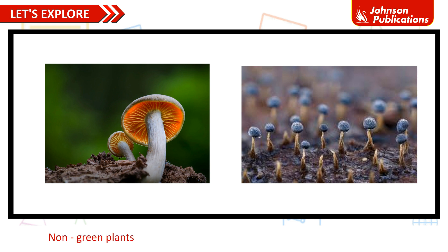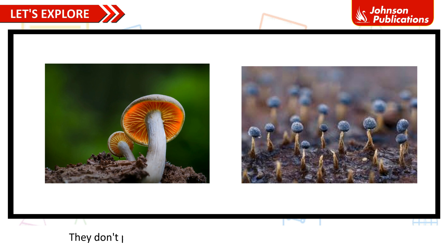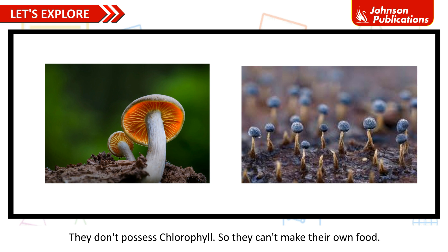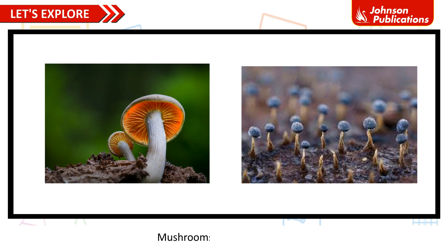Non-green plants. Plants like mushrooms and molds are non-green plants. They don't possess chlorophyll, so they can't make their own food. These plants grow on stale food and dead animals. Examples: mushrooms, molds.